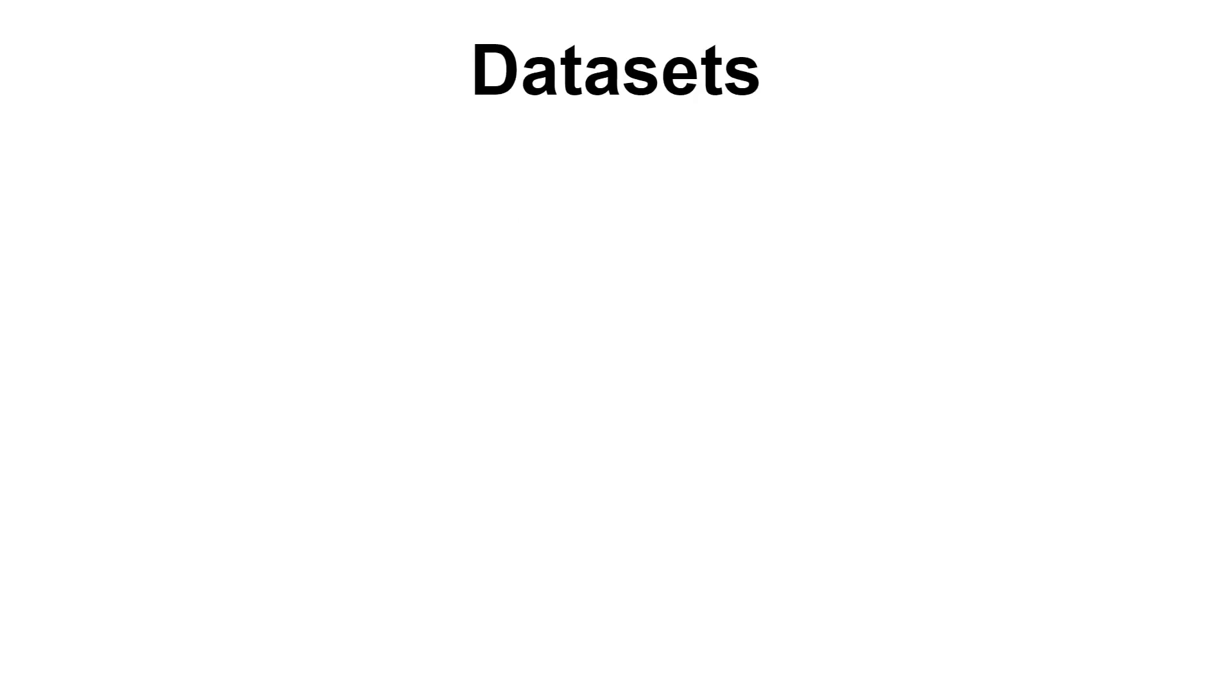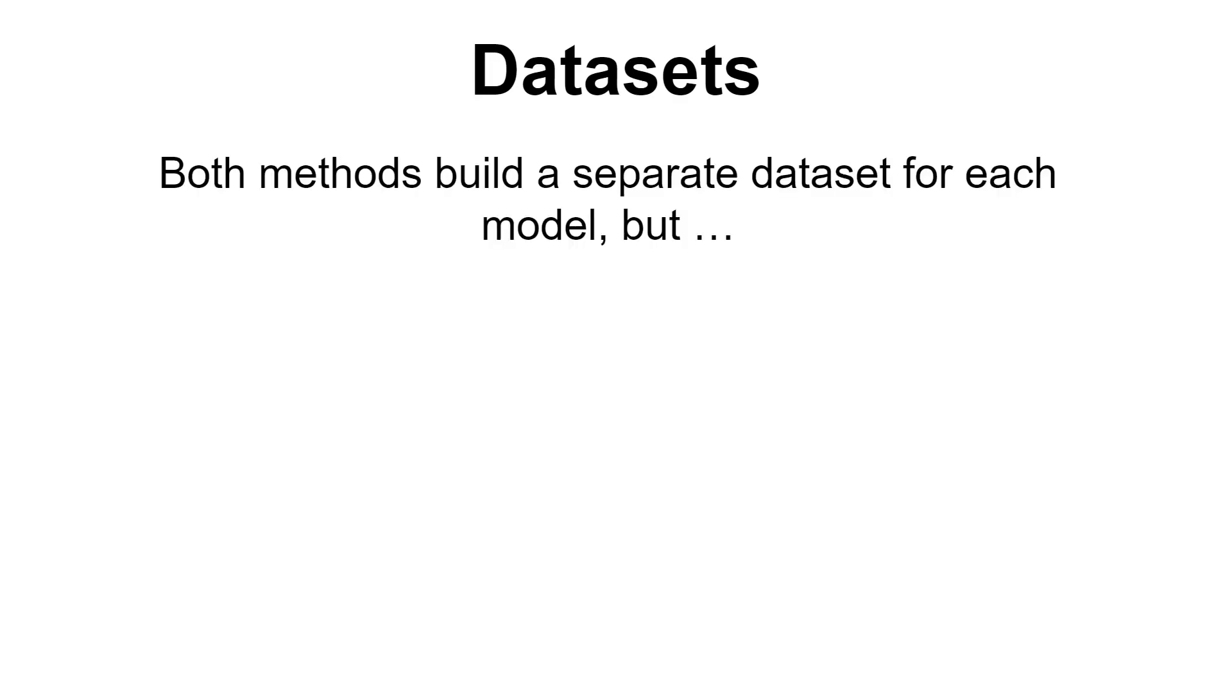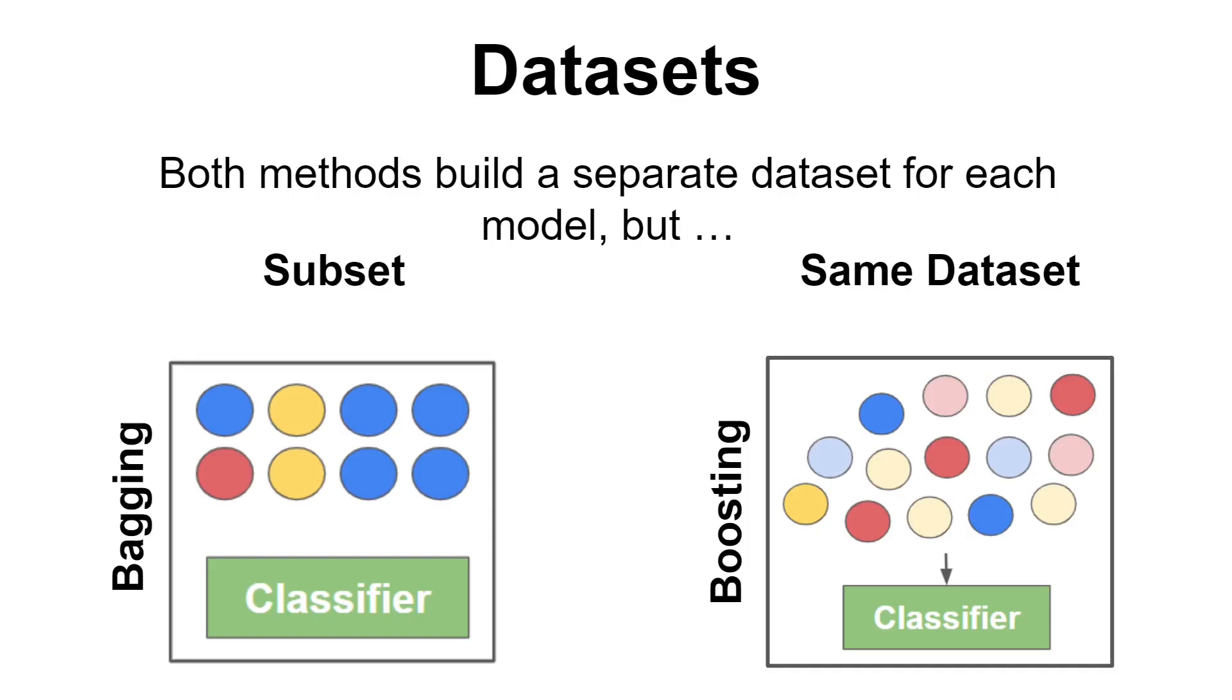Another thing that we might consider when looking at these two ensemble learning methods is the dataset on which they train the classifiers. So both models build a separate data for each model, but they do it differently. Bagging uses a subset of the original dataset that is generated by sampling with replacement, while boosting uses the same samples as in the original dataset. Also, another important distinction is that in bagging the samples are unweighted, while in boosting they are weighted in regards to the predictions given by the previous classifier.